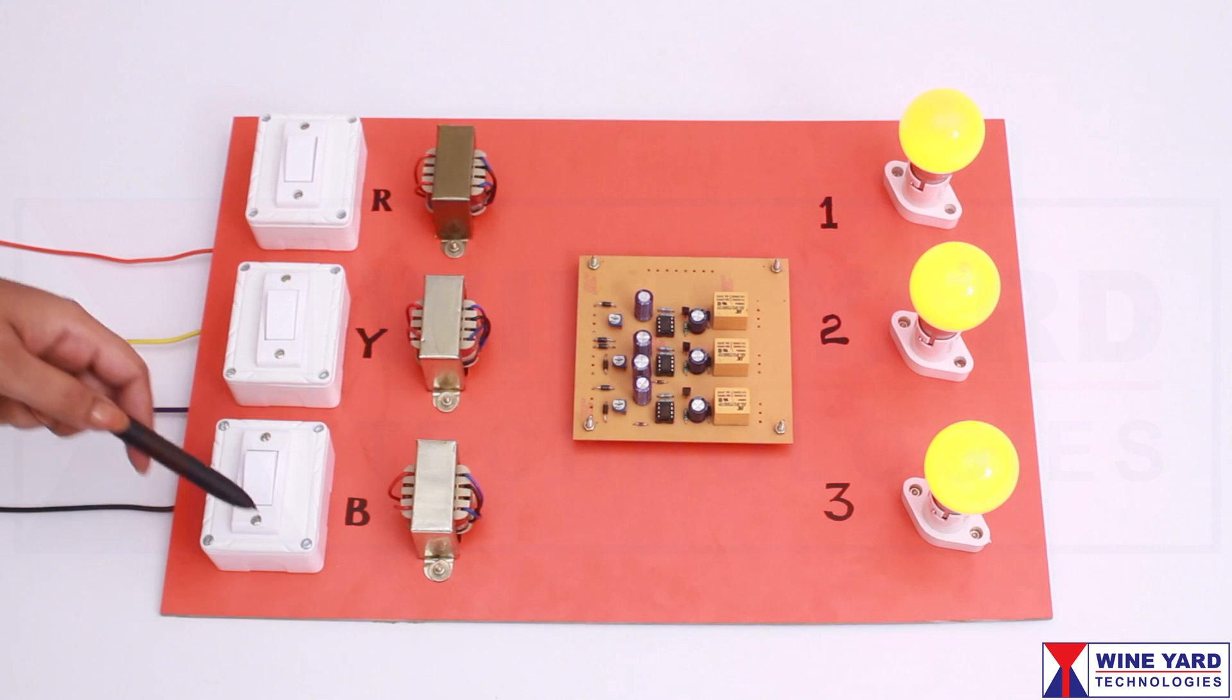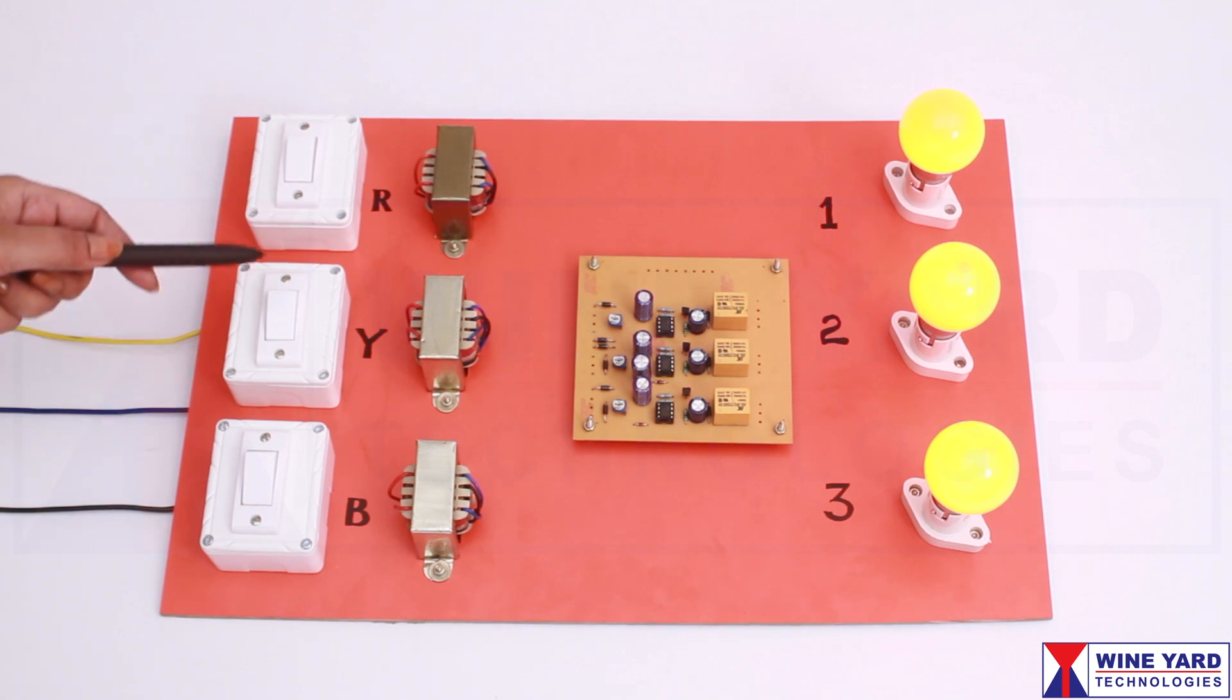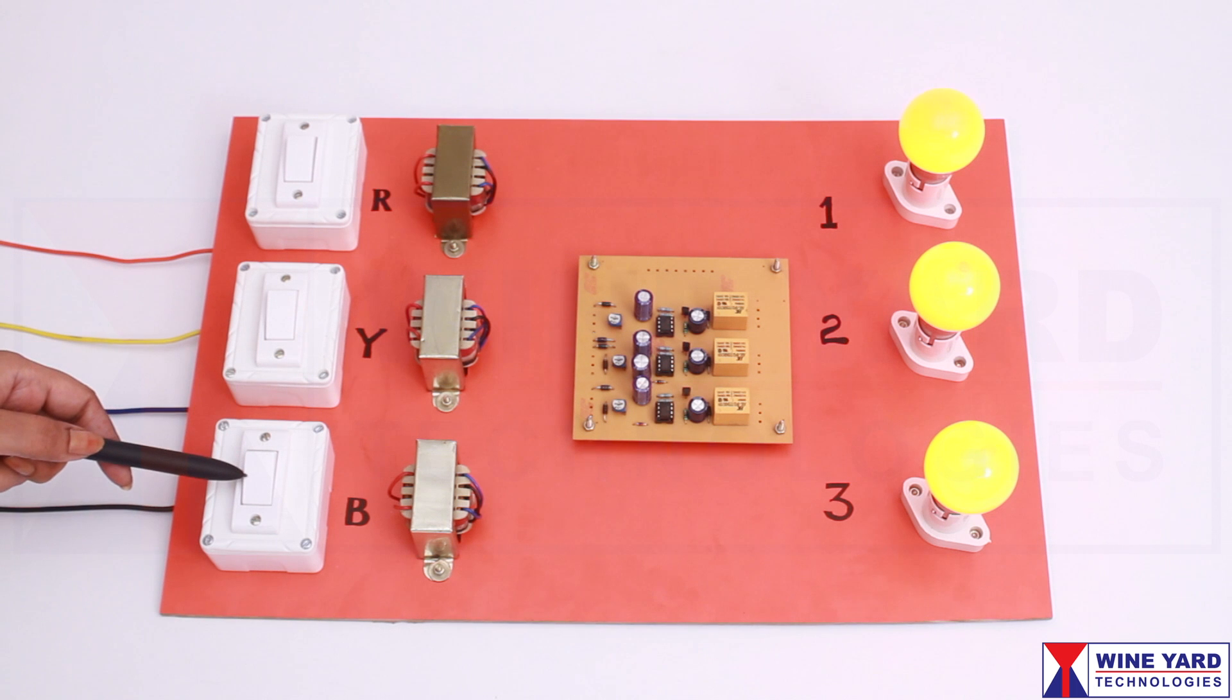This project is an automatic active phase selector for single phase loads. Here this load is powered by phase R. This load is connected to phase Y and this is connected to phase B.